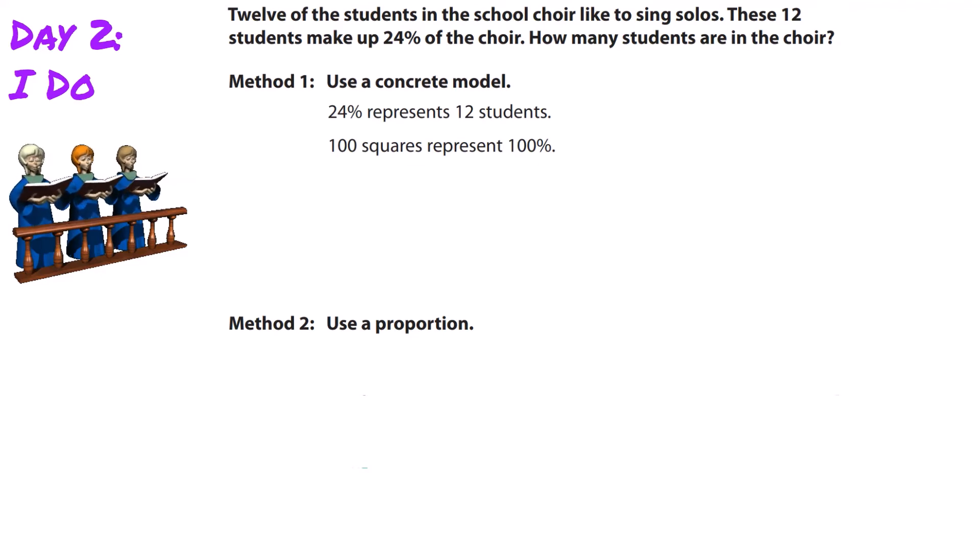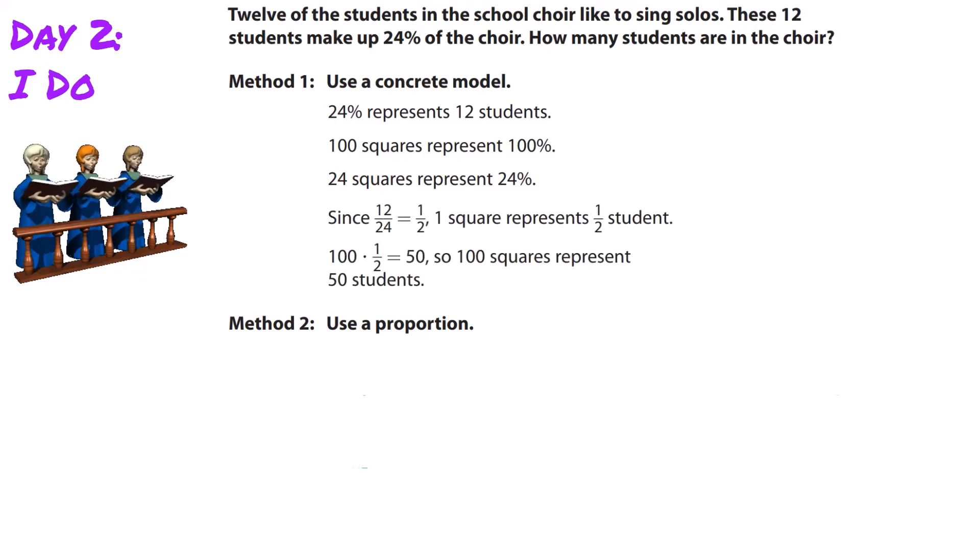We start with 24% represents 12 students. 100 squares represents 100% of the students. Since 12/24 = 1/2, one square represents 1/2 of a student. Therefore, 100 × 1/2 = 50. Our 100 squares represent 50 students—that's our whole.